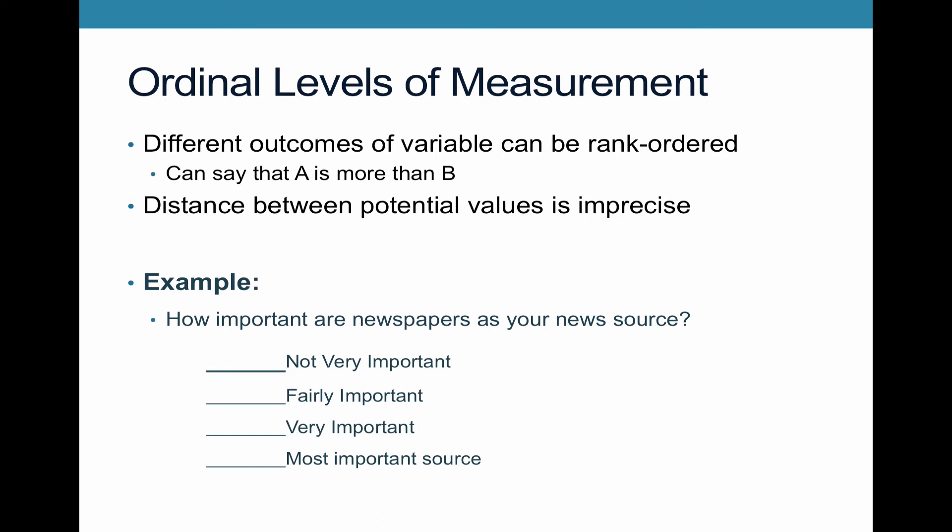For example, if you were to ask somebody 'How important are newspapers as your news source?' with responses: not very important, fairly important, very important, most important — somebody who says newspapers are their most important source ranks higher than somebody who says fairly important. So we can rank order these, but you can't say it's twice as important even though it's two positions more. You can get a sense of where the different answers are in relation to each other, but they're not real numbers in the way that numbers are more meaningful in later levels of measurement.